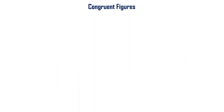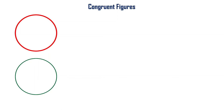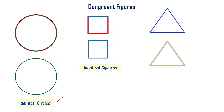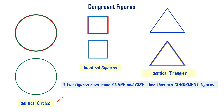Now regarding congruency: if two circles have the same radius, they have the same shape and size and are identical, so they are congruent. Similarly, squares of the same shape and size are congruent, and equilateral triangles with the same shape and size are also congruent.